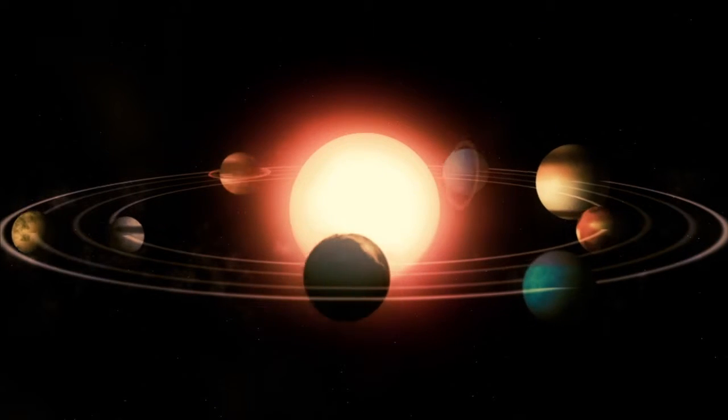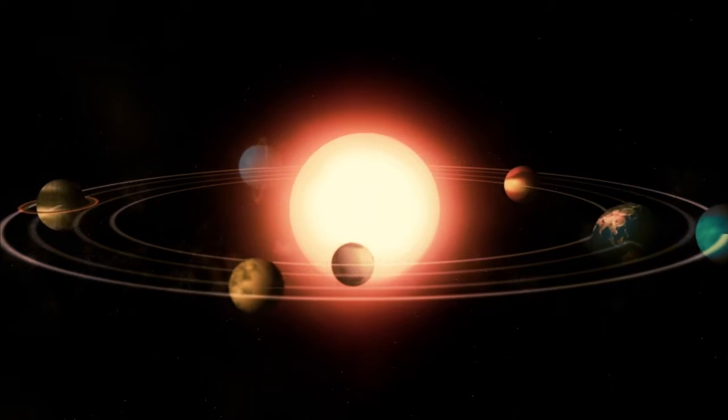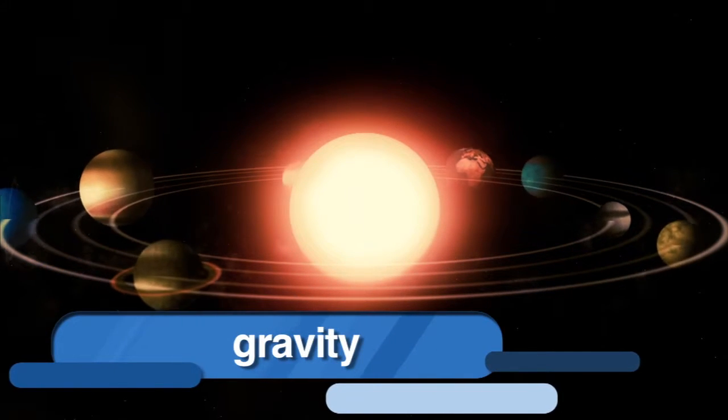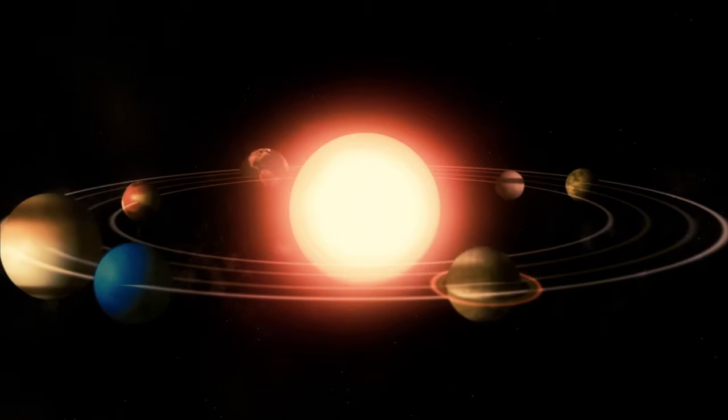What makes the Sun such an important part of our solar system is that all eight planets move around the Sun because of gravity. And the gravity from the Sun keeps everything from flying off into space.